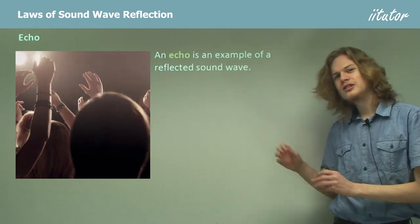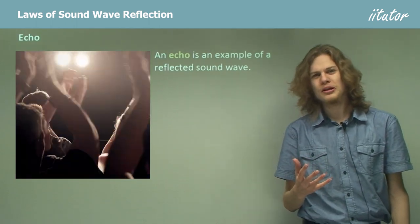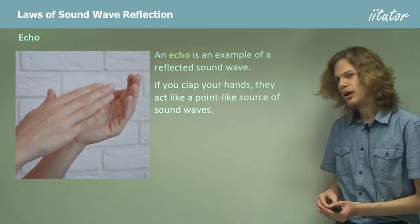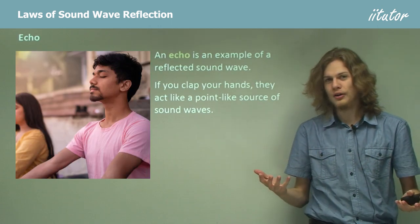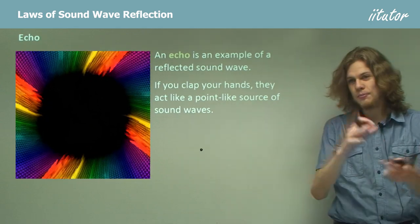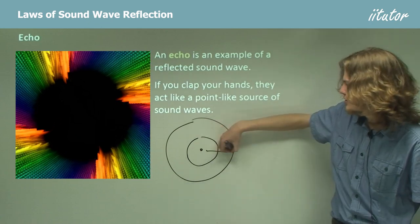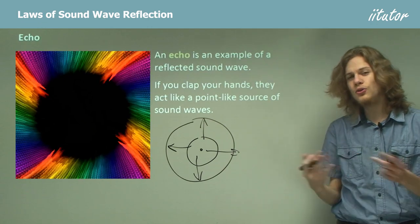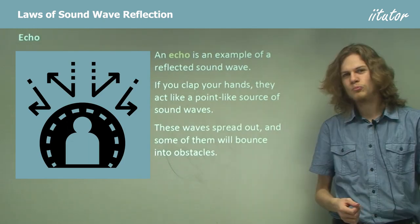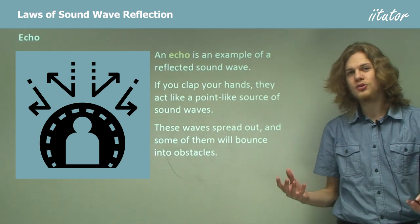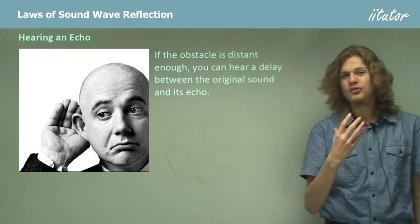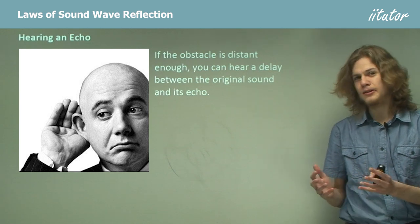An echo is an example of a reflected sound wave. If you clap your hands, you get a sound spreading out in all directions — that's why you can hear a clap whether you're in front of, behind, or to the side of the person clapping. The waves spread out and some of them bounce off obstacles like walls, the ceiling, the floor, or a tree. If the obstacle is distant enough, there'll be a delay between the original sound and the reflected sound wave, because sound takes time to travel.